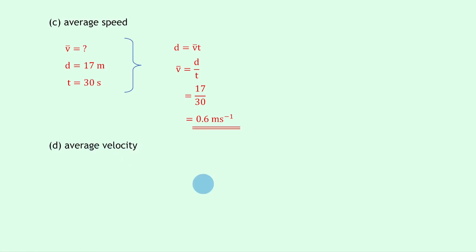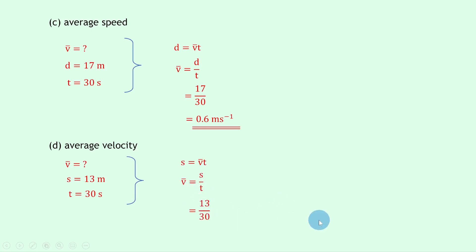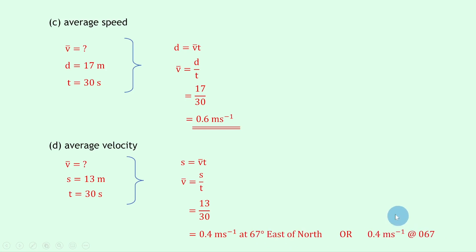For part d, to find the average velocity, we use the displacement from part b rather than the total distance of 17 meters. We know the displacement s is equal to 13 meters — we'll drop the direction for now but remember to include it later — and the time t is 30 seconds. Writing our equation s equals v-bar times t and rearranging gives v-bar equals s over t. Substituting gives 13 divided by 30, which equals 0.4 meters per second. Because it's a vector, we state the direction: 0.4 meters per second at 67 degrees east of north, or 0.4 meters per second at a bearing of 067.